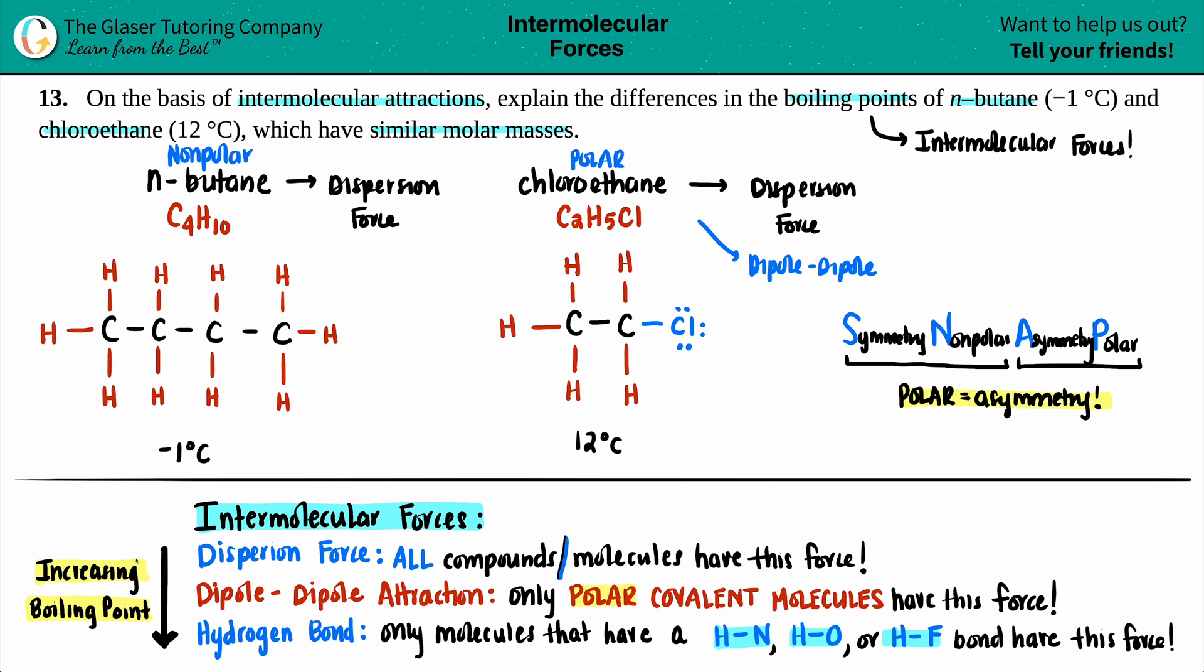Now, remember, as you start collecting intermolecular forces, that's going to increase your boiling point. For n-butane, you only have one intermolecular force. For chloroethane, you got dispersion and you have dipole-dipole. So that's two intermolecular forces. It says, on the basis of intermolecular attractions, explain the differences. Since C2H5Cl has more intermolecular forces, this means that it will have a higher boiling point, which it does. And that is basically the answer to this question. Specifically, the intermolecular forces that it has is the dispersion but also the dipole-dipole. The butane does not have the dipole-dipole, bringing the boiling point lower.